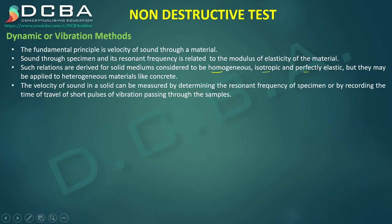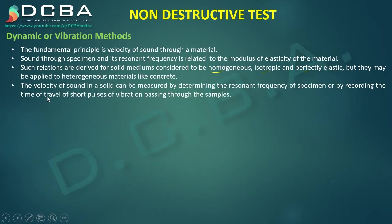The velocity of sound can be determined in two ways. The first is the resonant frequency method, based on the principle that every object vibrates or resonates at a particular natural frequency — like opera singers breaking glass by matching the frequency of their voice to the resonant frequency of the glass. The second technique involves passing short pulses of vibration into the material and recording the time required for those pulses to pass through it.